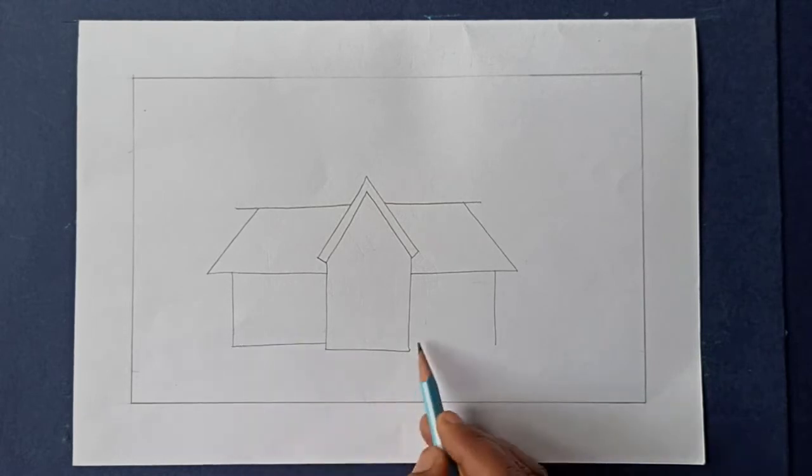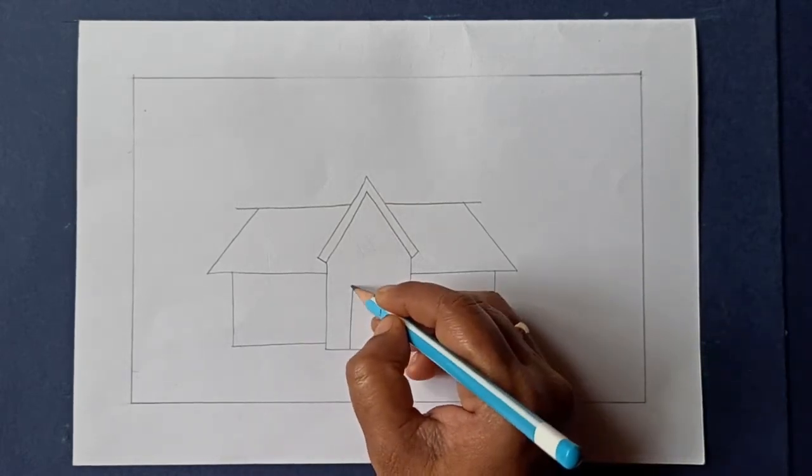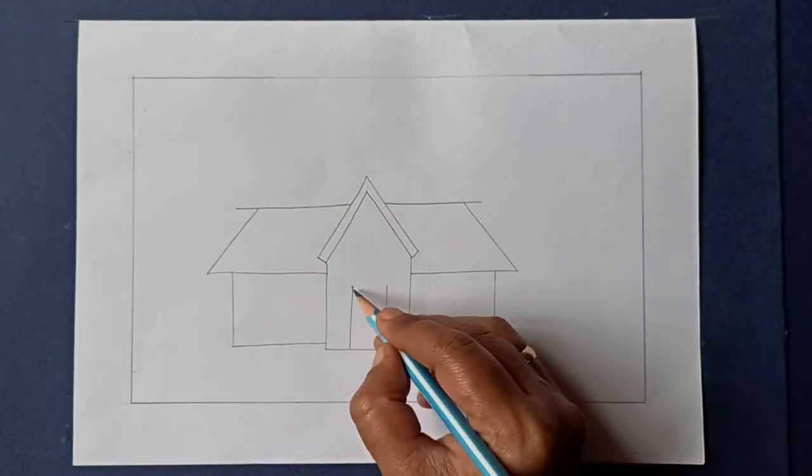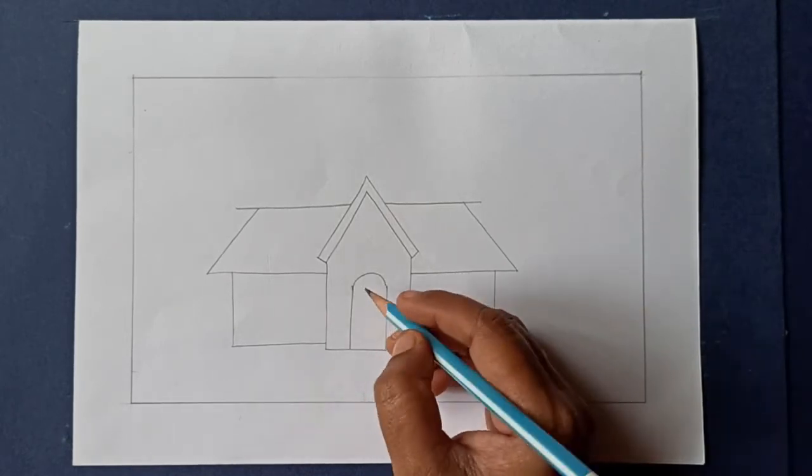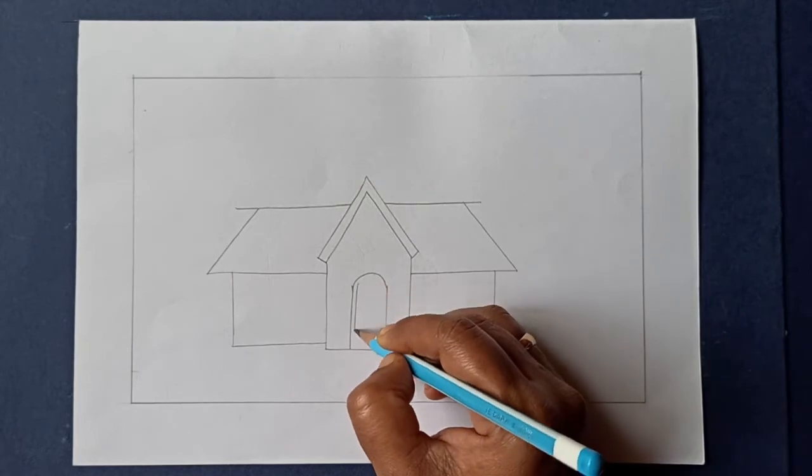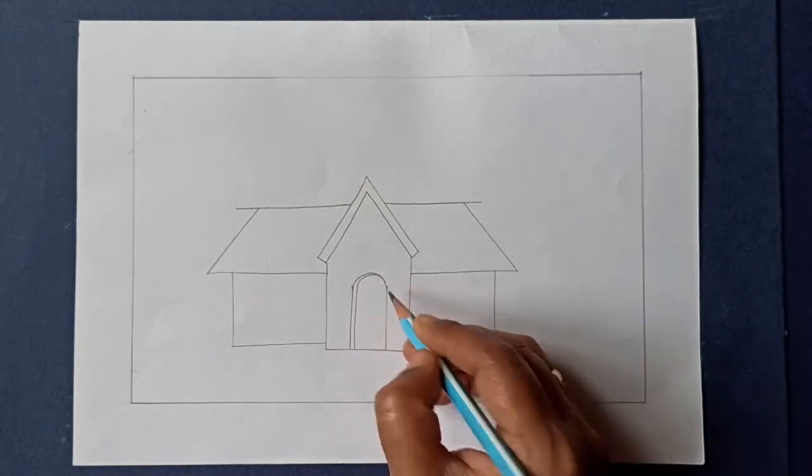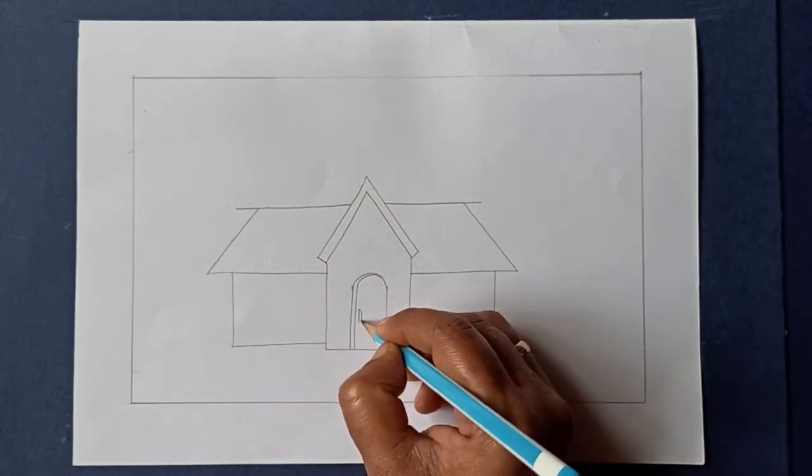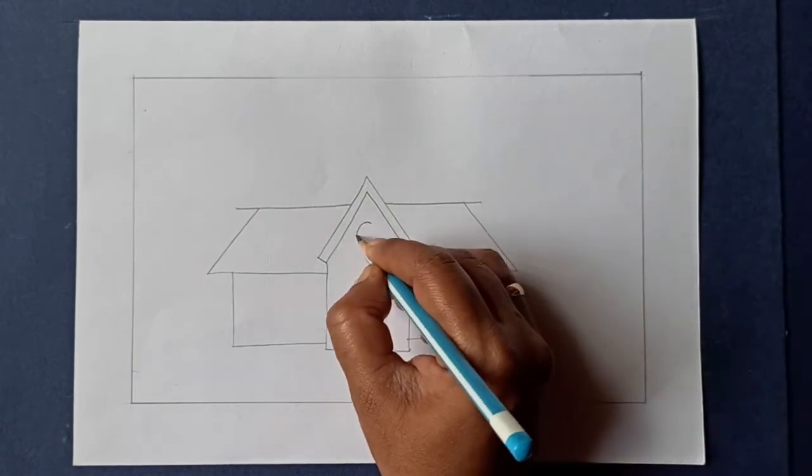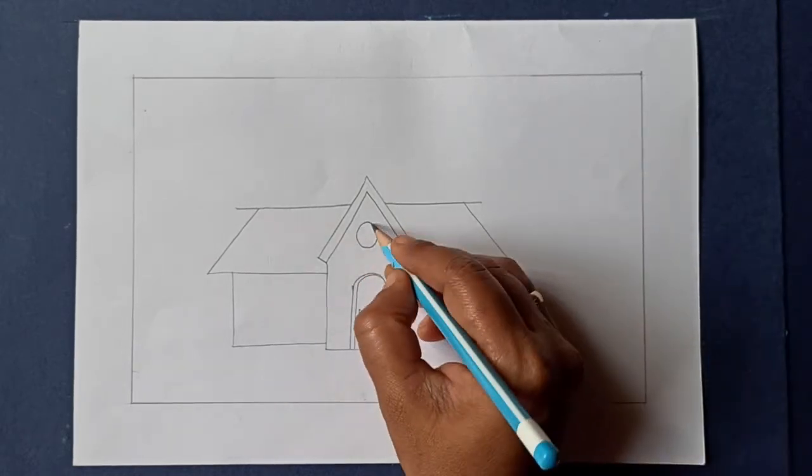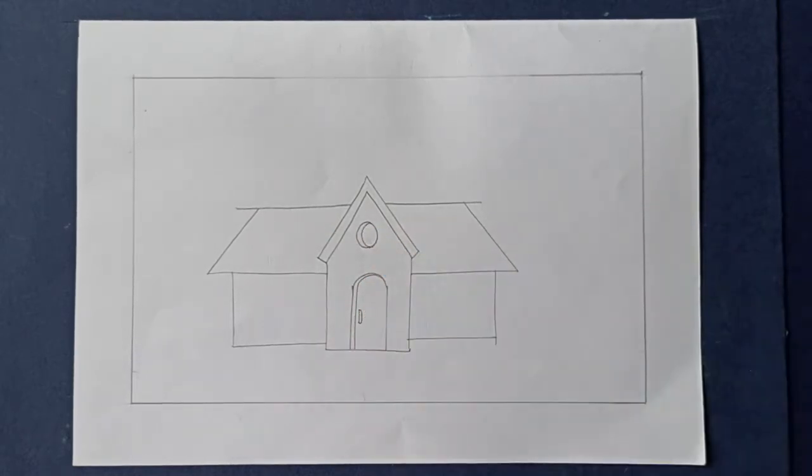Draw a line for the base. Let's draw a door now. Connect it with a curve. Draw a double line for the door. Add a handle to the door. Draw a circle. Add a double line here. Add these lines.